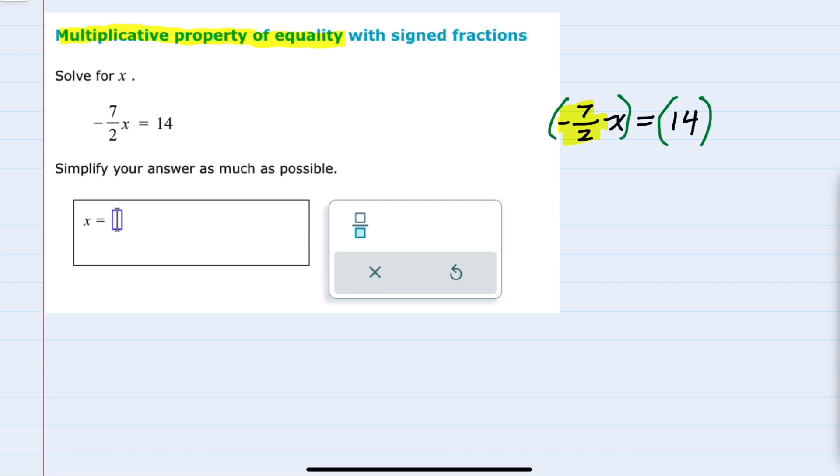So to undo that negative 7 halves we want to multiply by the reciprocal of that, negative 2 sevenths.